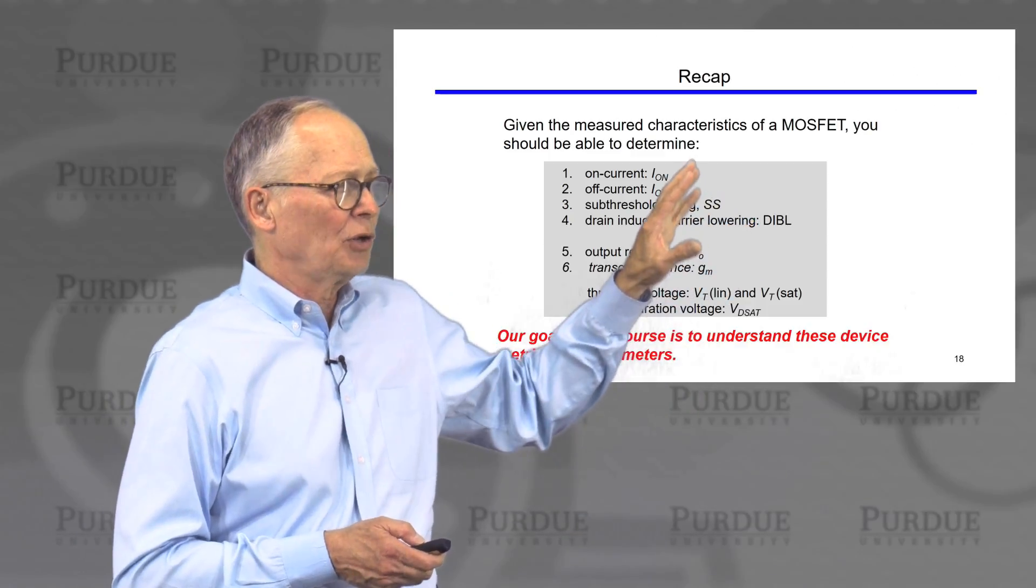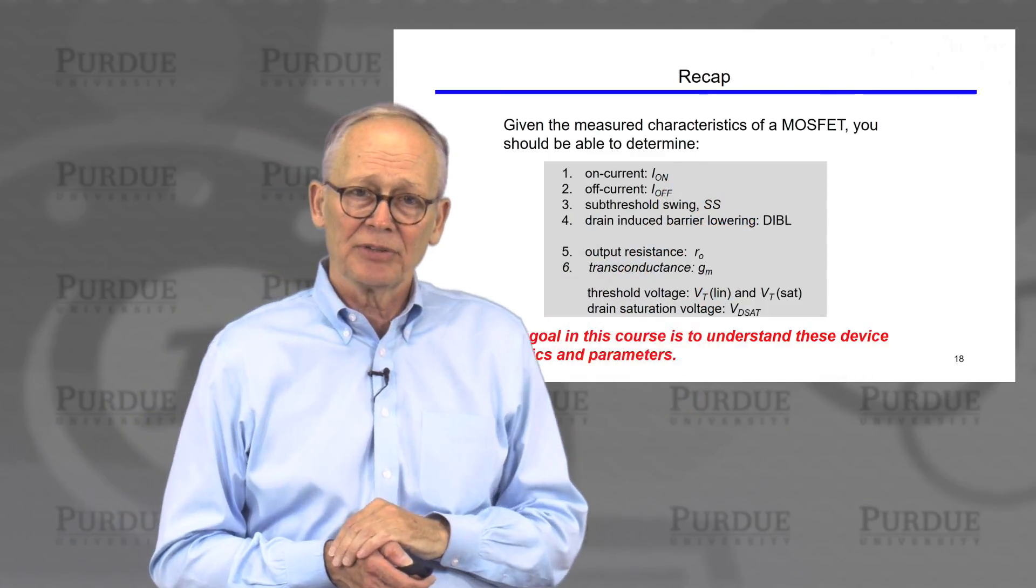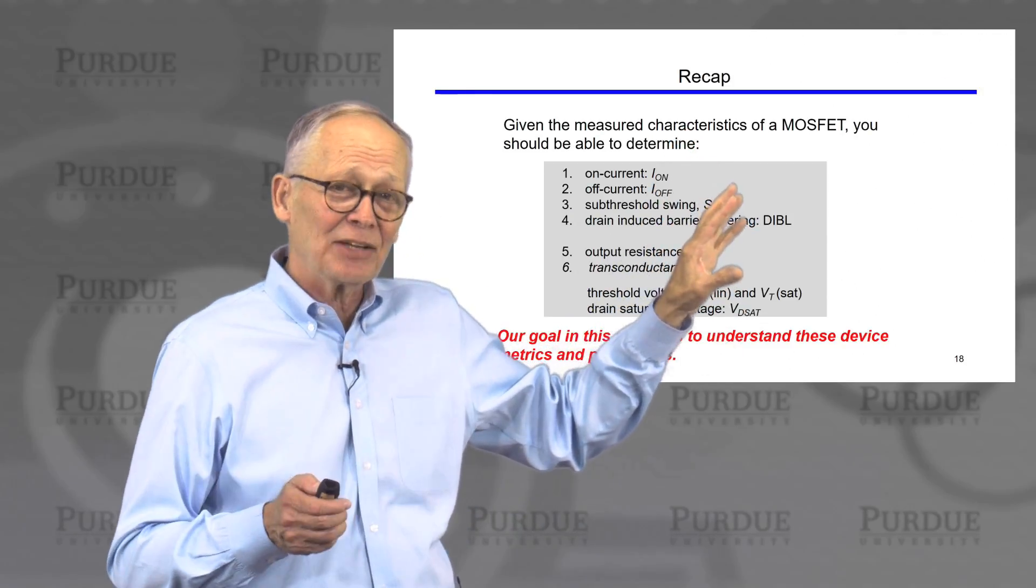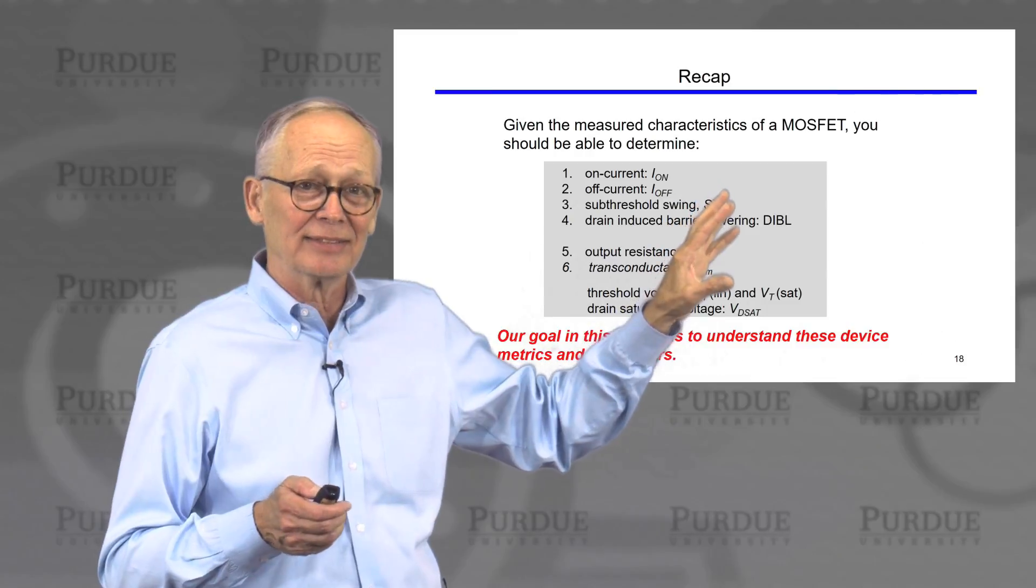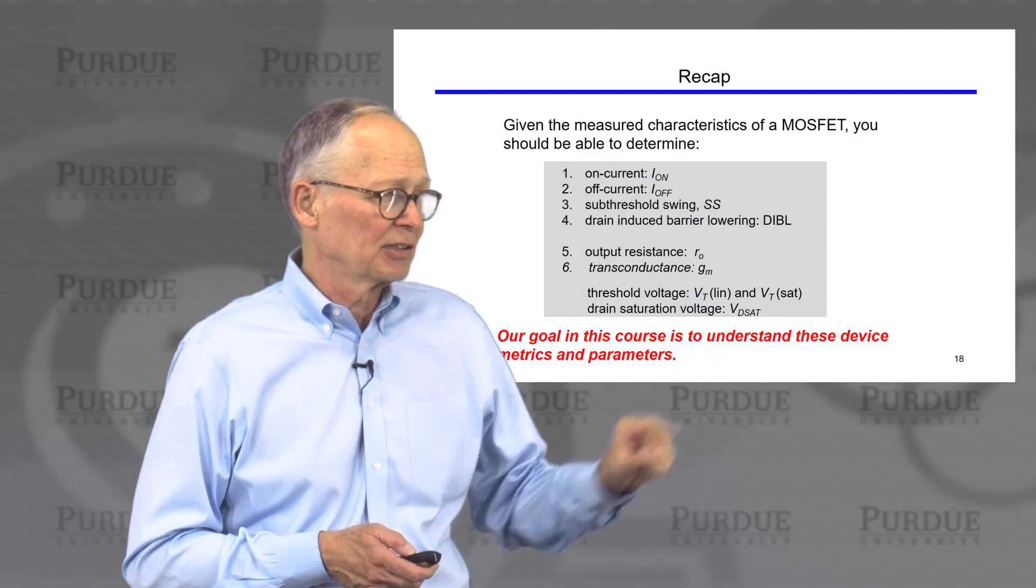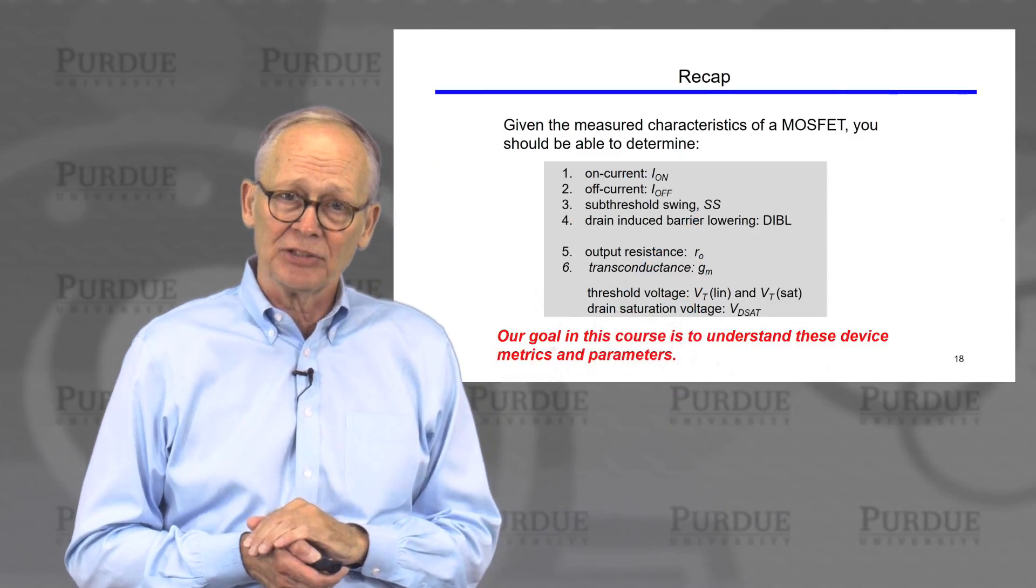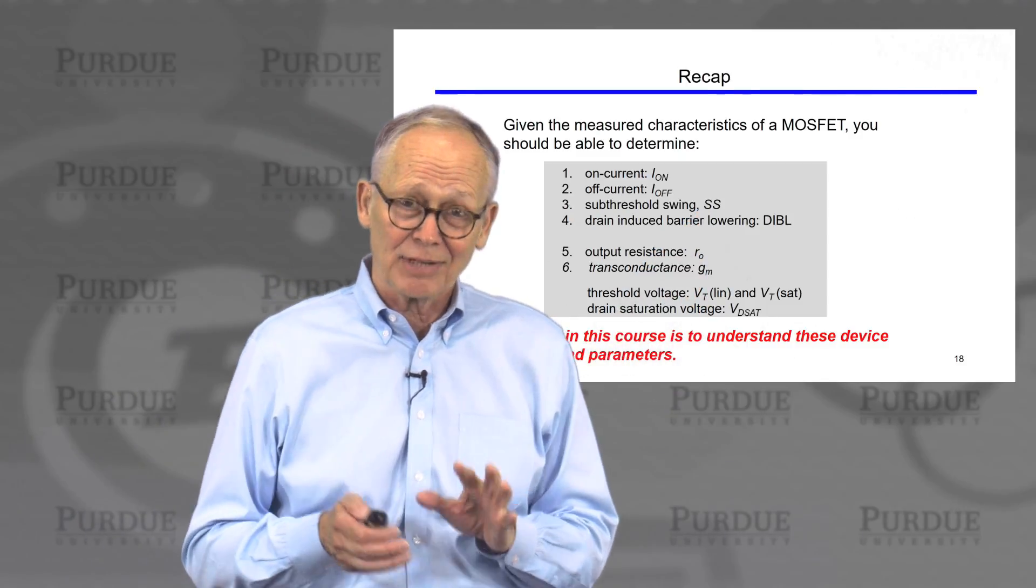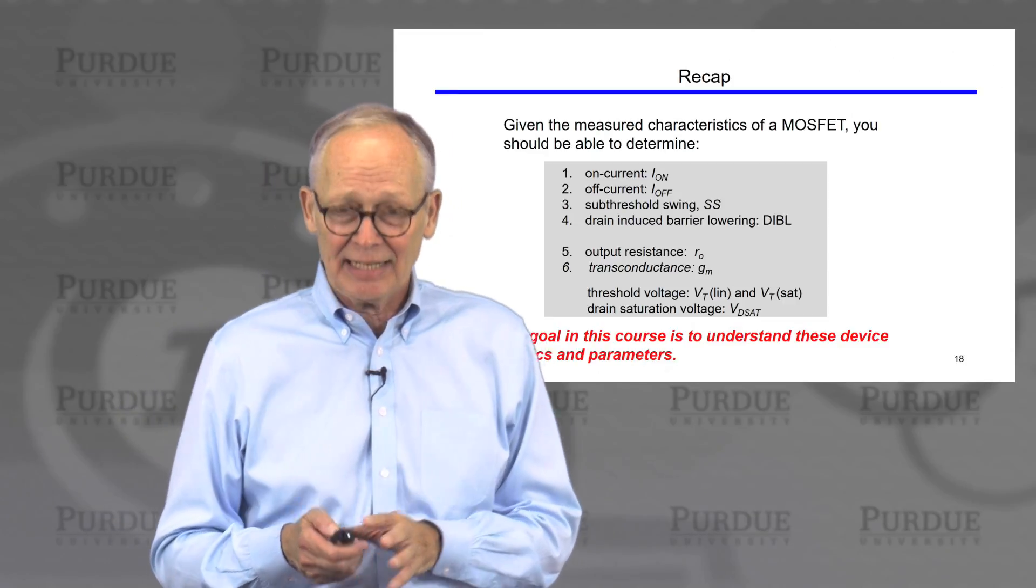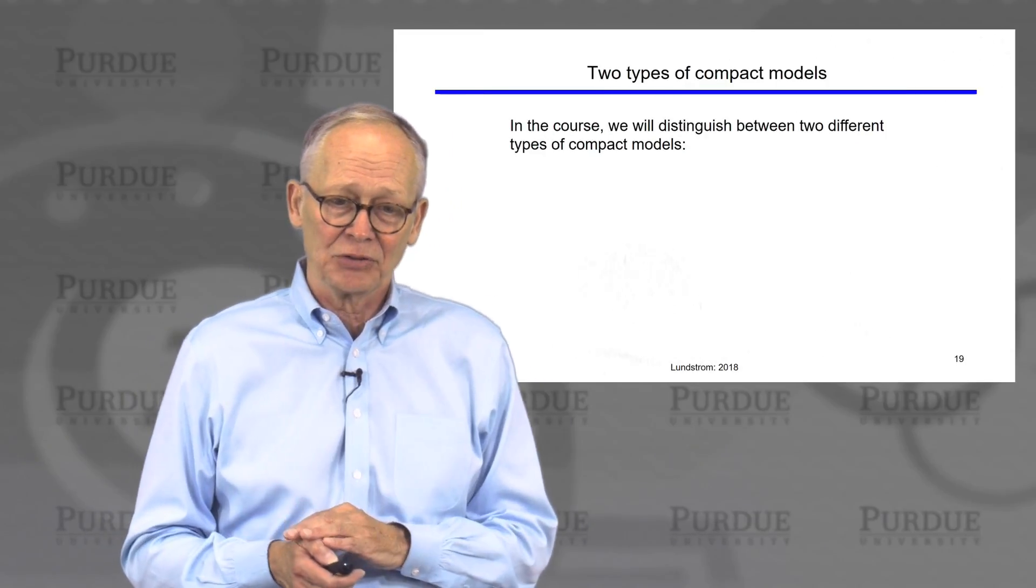Okay, so just to summarize, these are all terms now that you should be familiar with, with how they're defined, what they mean, not yet with what causes them, that's what the course is about, but you should understand how you could take a measured IV characteristic and extract each one of these parameters. Our goal in the course is to understand these parameters, where do they come from, what's causing them to have the values that they do.